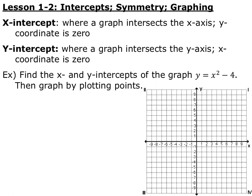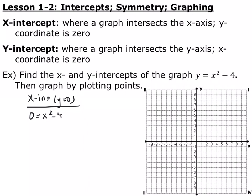Here's an example: we have y equals x squared minus 4, that's a parabola, and we want to find the x and y-intercepts. If we want to find the x-intercept, we know that y is equal to 0, so I'm going to substitute y in my equation for 0. So I get 0 is equal to x squared minus 4.